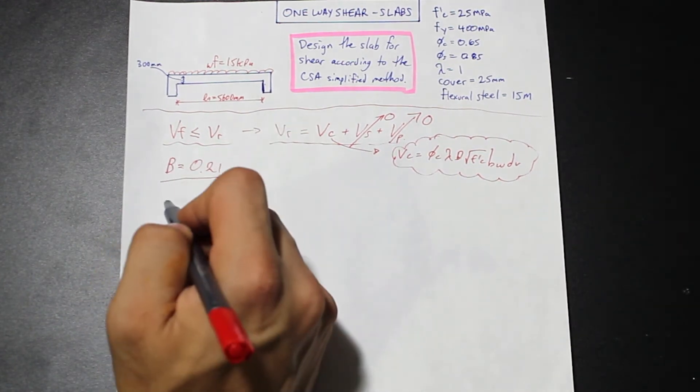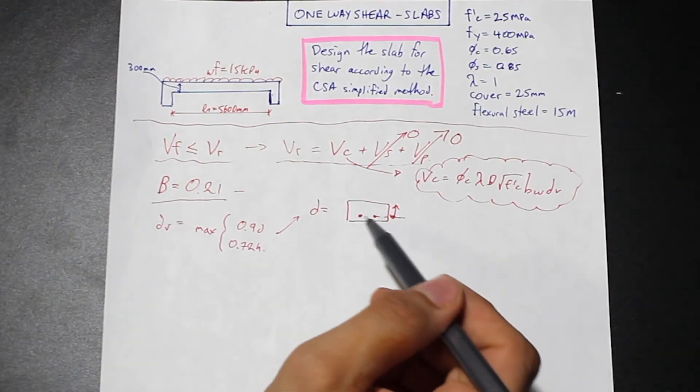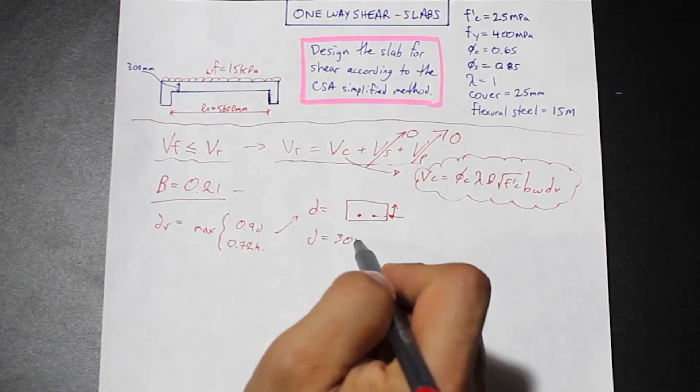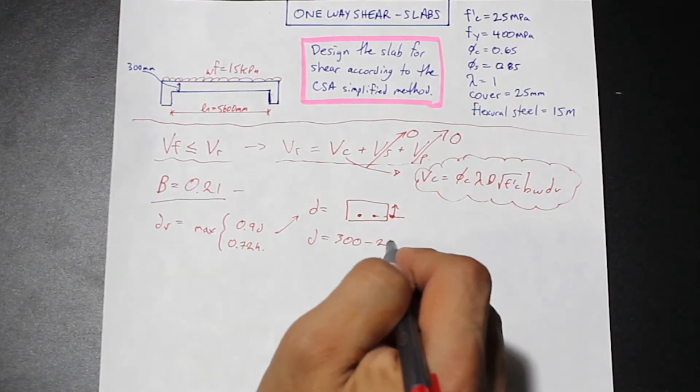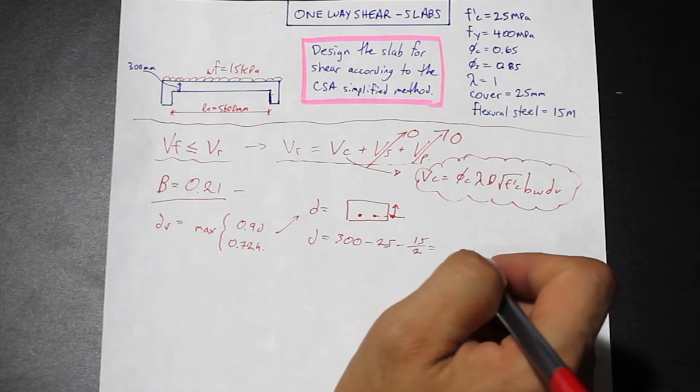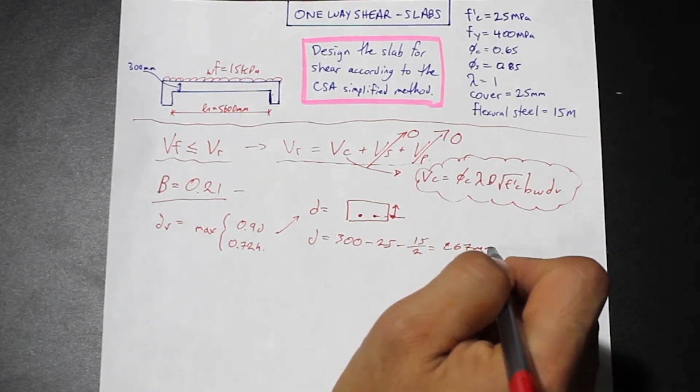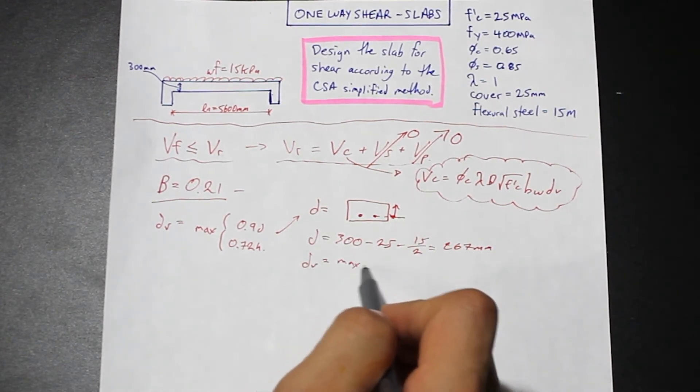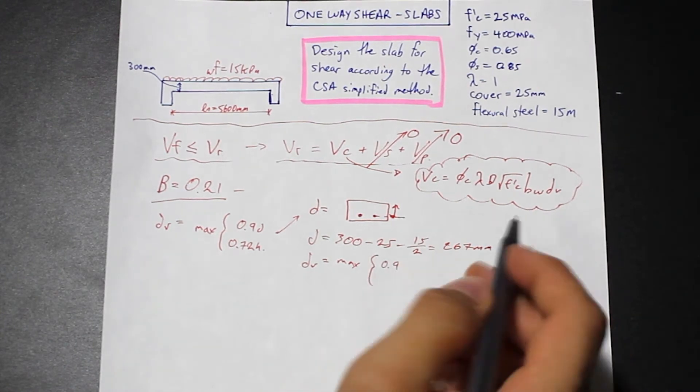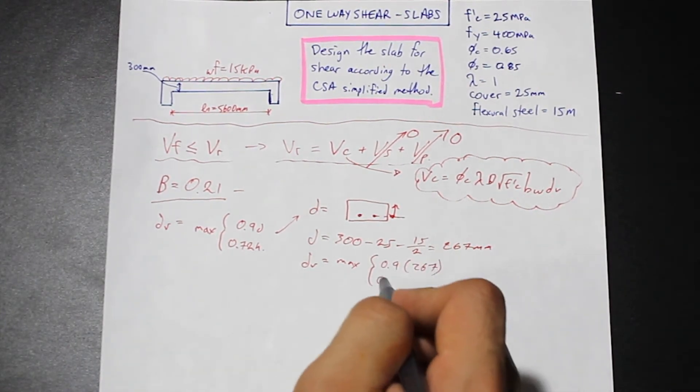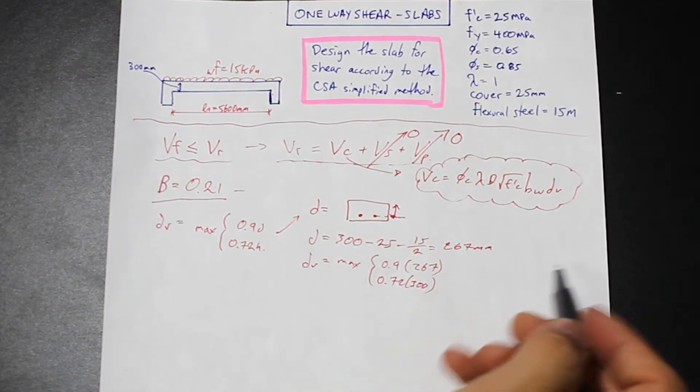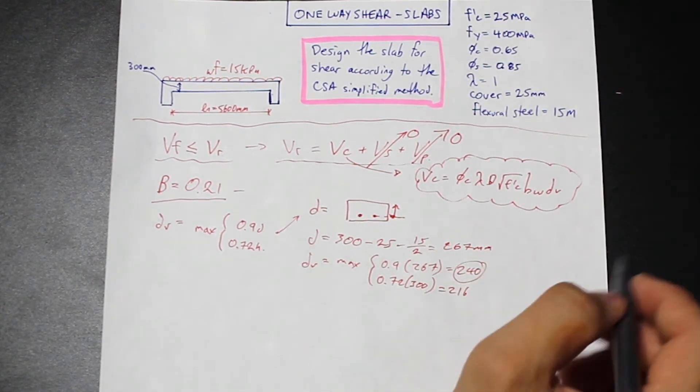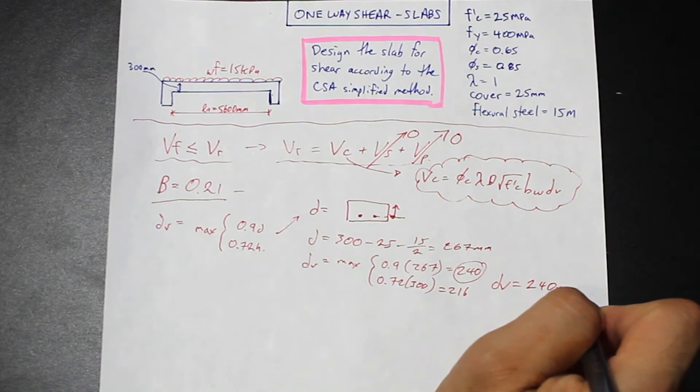Now let's take a look at dv. If I draw a little sketch here, d is the distance to the depth of the flexural tension steel. d is going to be equal to our depth, which is 300, minus our cover of 25, minus our flexural steel of 15. This gives us a value of 267 millimeters. Let's now calculate our dv. Our dv is the maximum of 0.9 times 267, or 0.72 times 300. This is equal to 240, and this is equal to 216. So we're going to take 240. So dv is 240 millimeters.